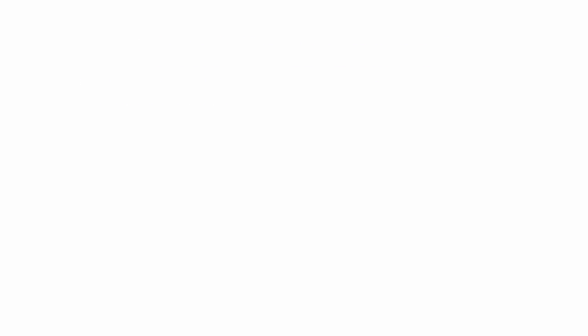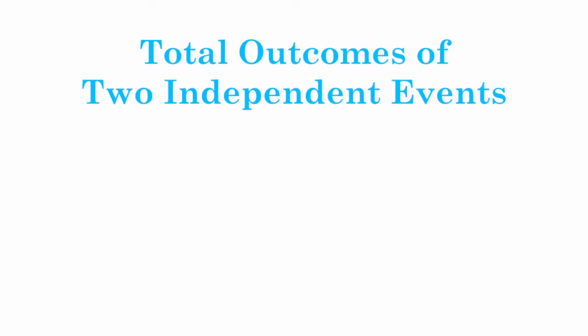So, to find the total number of outcomes of two independent events, you simply multiply the number of outcomes of each event.